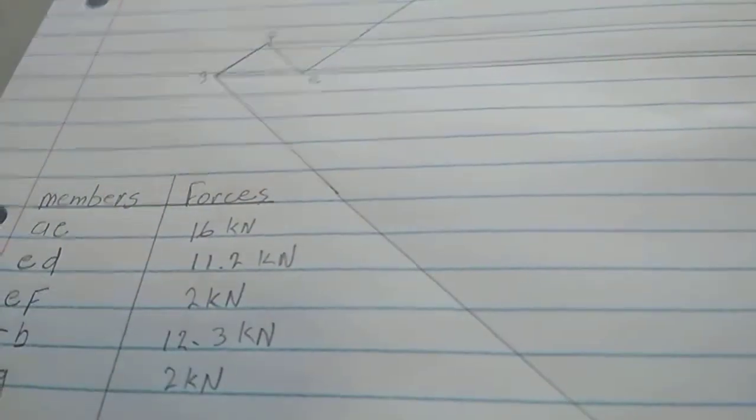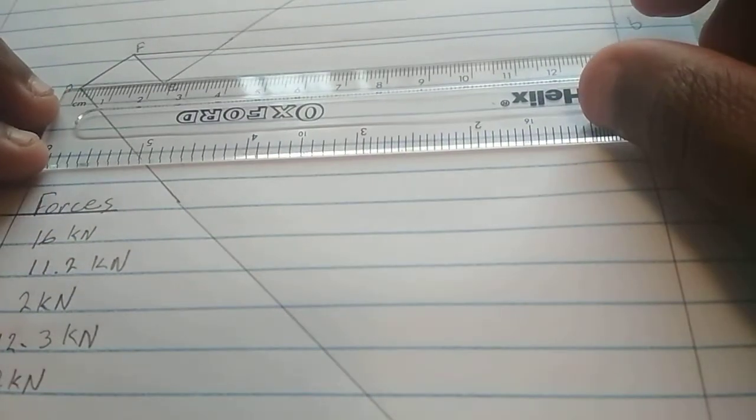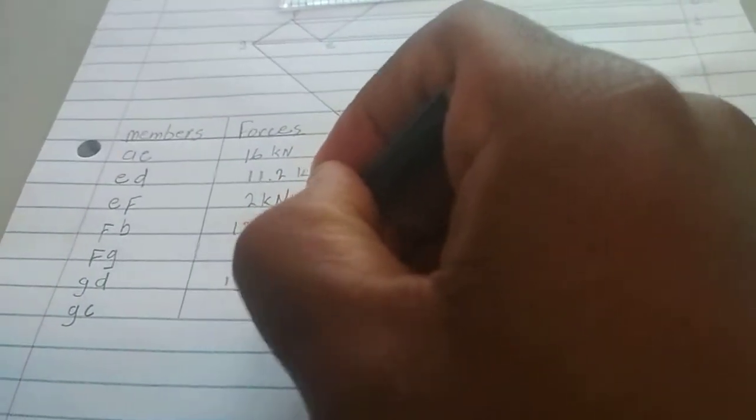And then the next one is GD. There is G, there is D over there. So we measure. Measure by 13.5 kilonewtons.